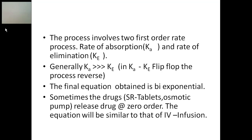In cases where Ka is lower than Ke, this is called the flip-flop of Ka and Ke — also known as flip-flop kinetics. Normally, elimination is slower and absorption is faster, but in certain cases absorption becomes slower and elimination becomes faster. This often occurs with drug delivery systems that restrict the drug release rate, such as sustained release formulations, causing the absorption rate to slow down.